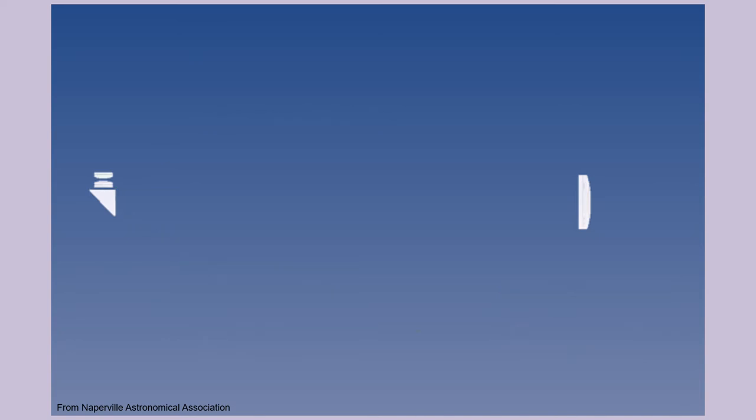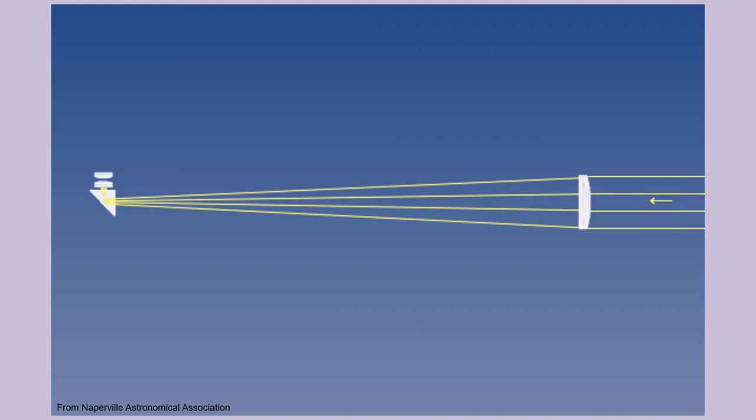Let's follow incoming light as it passes through the telescope. Light enters through the front, that's the right side in this diagram, until it reaches the objective lens. The objective lens forms the light beam into a narrowing cone. The light is then reflected off the diagonal mirror and comes to a focus just before entering the eyepiece, forming an image of the distant object. The eyepiece then magnifies the image before the compressed light enters the pupil of your eye.